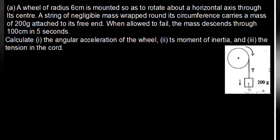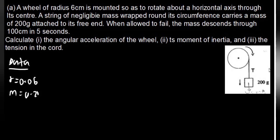I always tell you guys that when we are dealing with physics, first come up with data, because data is the one which is going to help us find the missing variables. Do we have the radius? Yes. The radius is 6 cm, which we convert to meters: 6 divided by 100 = 0.06 m. We have the mass, which is 200 grams: 200 divided by 1000 = 0.2 kg. We have the displacement, which is 100 cm divided by 100 = 1 meter. And we also have the time, which is 5 seconds.